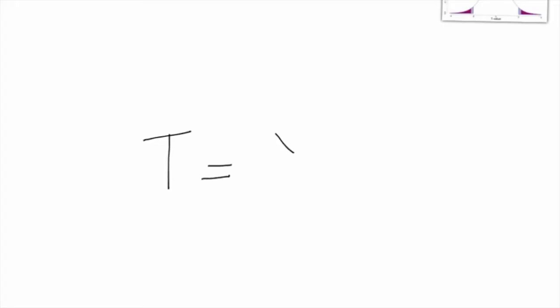When we calculate a t-value by subtracting the population average from the sample average and divide by the standard error of the sample, this will give us one t-value. Let's say that that t-value is two.